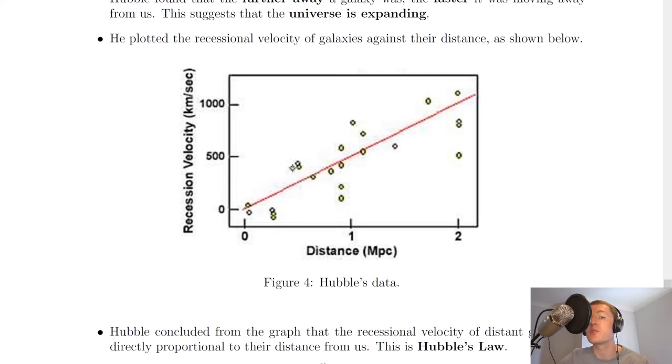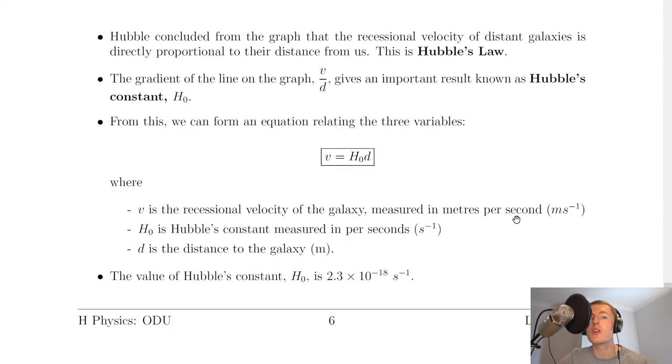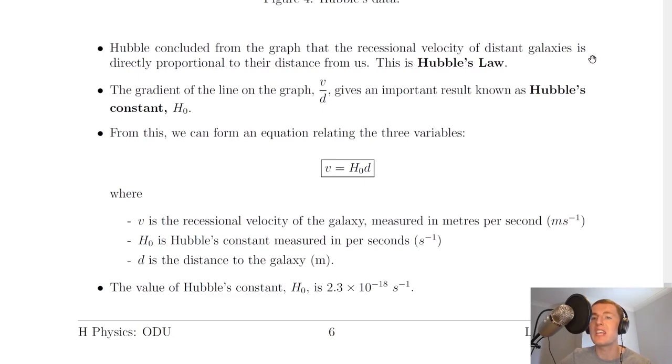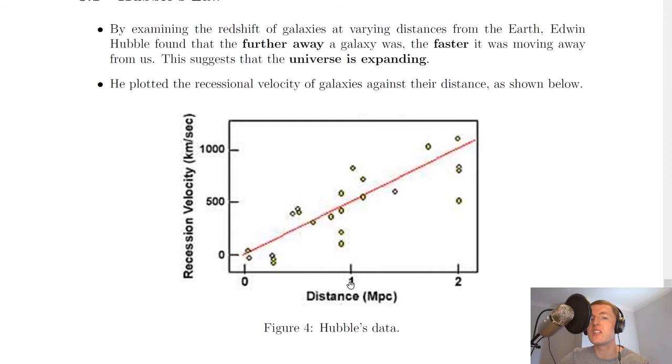So you'll notice that some of the points which is the data for some galaxies lies either side of the line but the line of best fit passes through the origin there. And this means that Hubble concluded from the graph that the recessional velocity of distant galaxies is directly proportional to their distance from us. So here's the distance of the galaxies away from us and here's the velocity of the galaxies as they move away from us.